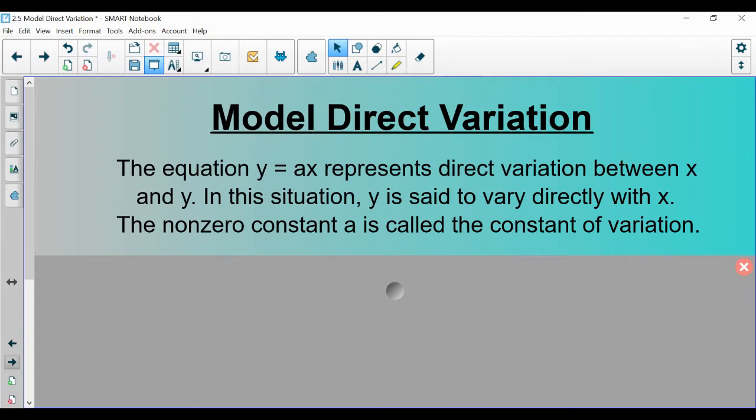In order to understand how to do all these tasks, we need to figure out what direct variation is. Direct variation equations are equations that look like this: y equals ax. A can be any non-zero number, so basically y equals some number times x. When you have an equation like this, we say that y varies directly with x.